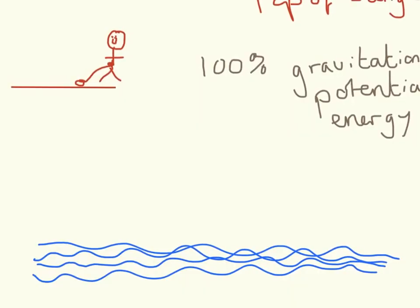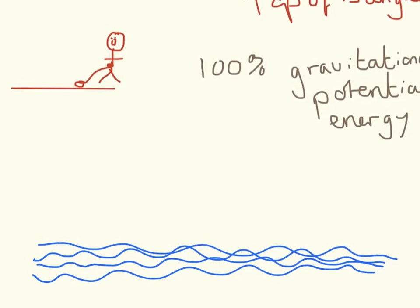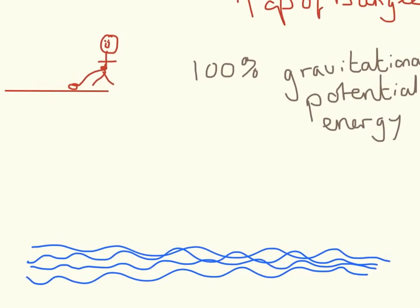So here are some diagrams just to show you that again. At the top, all of our energy is gravitational potential energy. Now when I'm talking in this example, I'm going to ignore any energy lost as friction or heat energy.